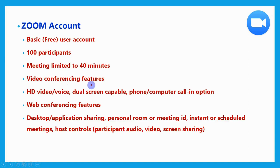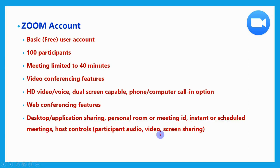Many video conferencing features are enabled, like HD video and voice, dual screen capability, phone and computer call options, and web conferencing features like desktop application sharing, personal room or meeting ID, scheduled meetings, and host control — that is, a participant's audio, video, and screen sharing can be controlled by the host. These are the features available in the basic Zoom account.